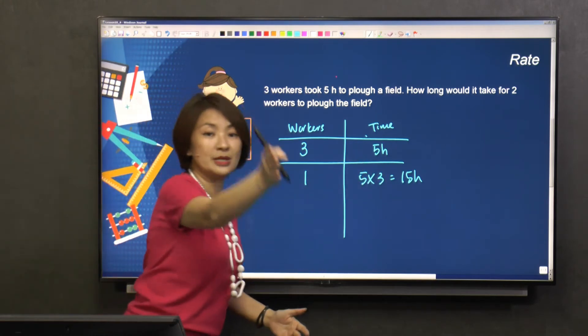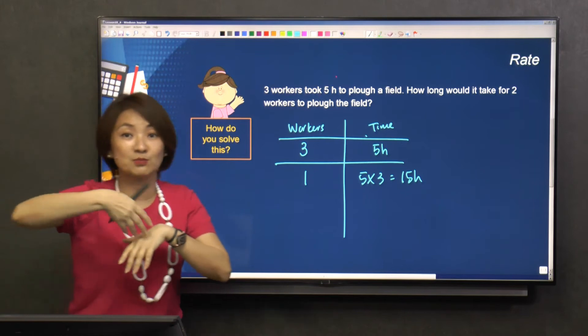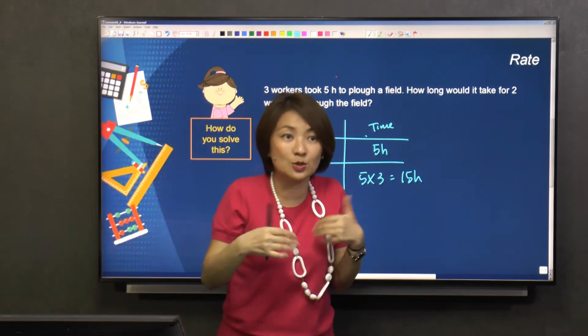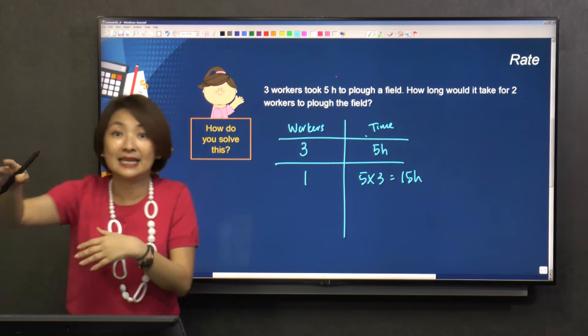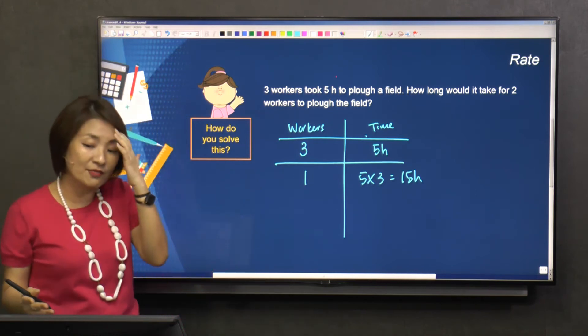So you cut the field into three equal parts. A, you're doing this, B, you're doing this, C, you're doing this. Now, only C has to do C, B, and A. He has to do all. Okay, so that's 15 hours.